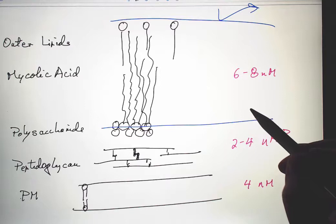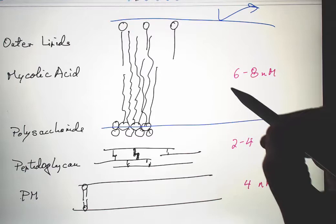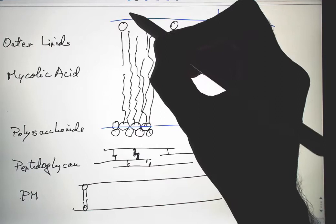It allows mycobacteria, for example, to stay alive inside of the macrophages that have ingested them and are trying to kill them. But the toxins they produce that ought to be able to kill the bacterium can't get through this waxy outer layer.